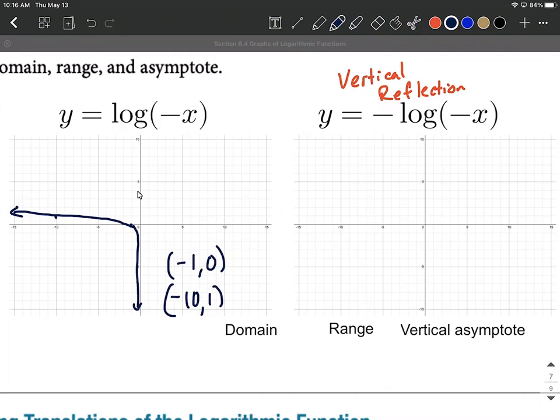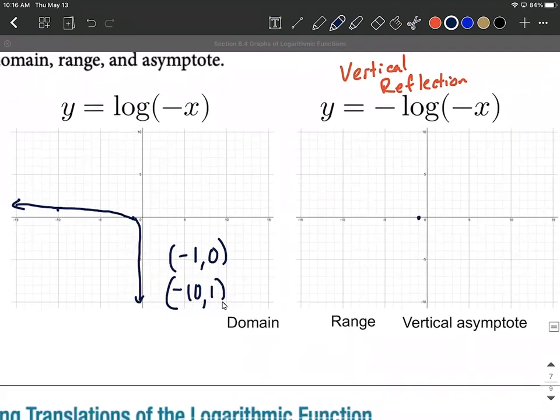So what happens is all the y values change basically. So these key points, what I'm going to do is I'm going to change the sign on the y values. So like I said it doesn't affect (-1, 0) because that, you know, you switch the sign on zero it's still zero.